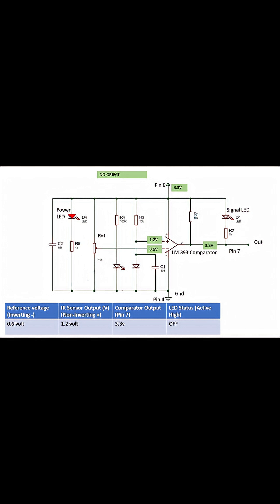Reference voltage is 0.6 volts. Since 1.2 volts is greater than 0.6 volts, the comparator output stays high. This keeps the output LED off.